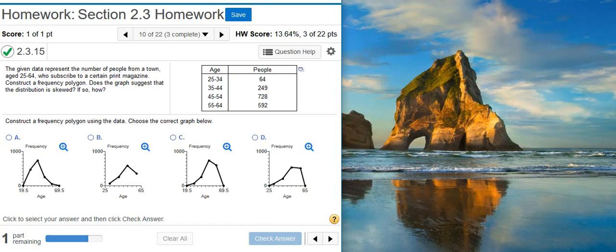Howdy, I'm Professor Curtis of Aspire Mountain Academy. Here with more statistics homework help. Today we're going to learn how to construct a frequency polygon in StatCrunch. Here's our problem statement: The given data represent the number of people from a town age 25 to 64 who subscribe to a certain print magazine.